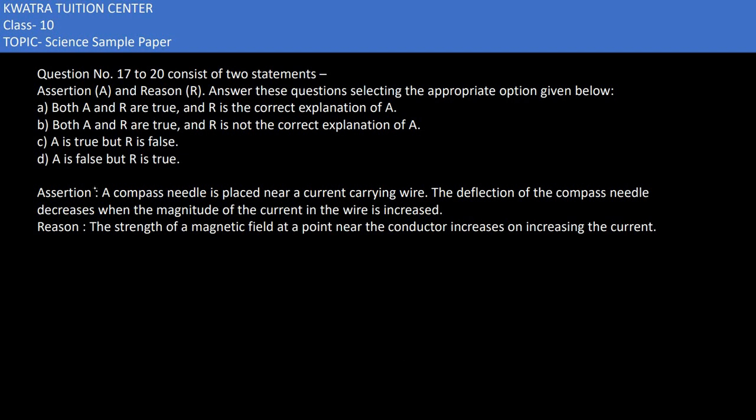Let's start with the 19th part. It says assertion: a compass needle is placed near a current carrying wire. The deflection of the compass needle decreases when the magnitude of the current in the wire is increased. That is very wrong. This is false, which means we have something.